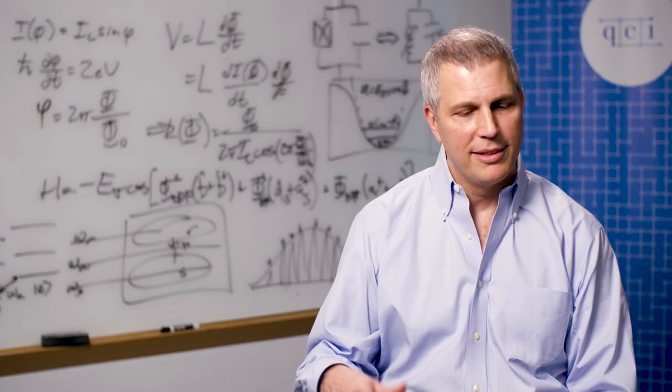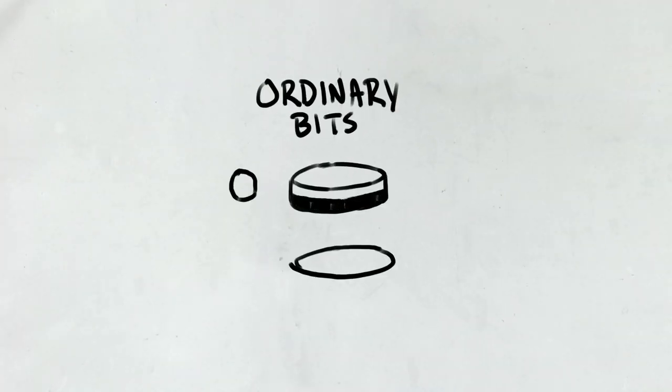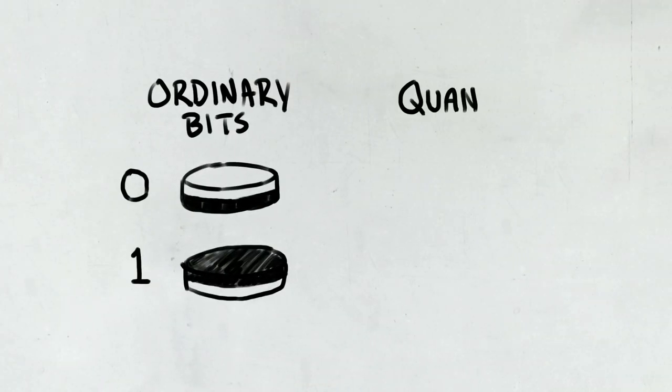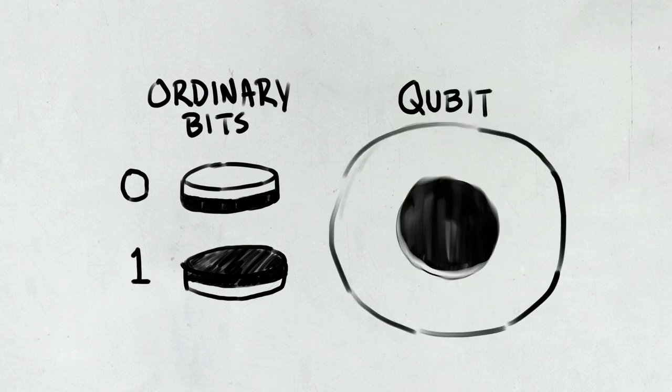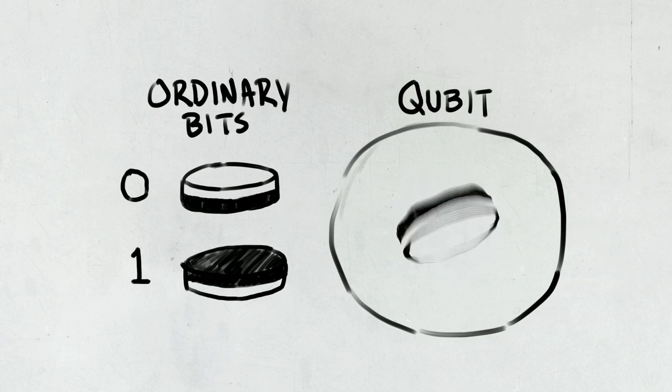Maybe you just take a little bit of the science talk out of it. It starts by taking the ordinary bits that are zero and one in conventional computers and replacing them with quantum bits or qubits. Now a quantum bit can be placed in a superposition which is both zero and one at the same time.